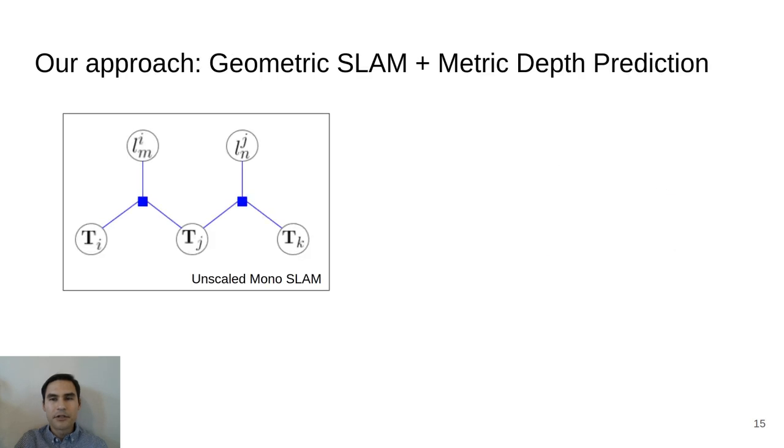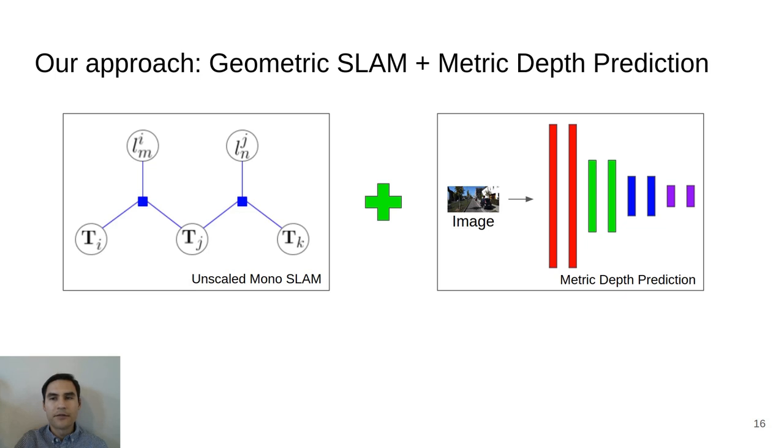We first leverage geometric monocular SLAM techniques to accurately estimate the relative geometry of the moving camera, and then train a coarse depth prediction network to provide the metric depths for the visible landmarks. The ratio of the unscaled depths from the SLAM graph and the metric depths of the network provides a measurement of the scale, which we can exploit to generate a fully metric solution.